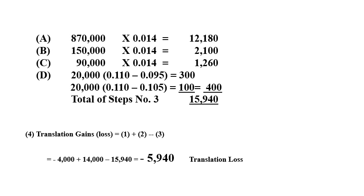For dividends (step d): the rate used is the rate at the date of payment. In this exercise, dividends were paid in two parts — 20,000 at June 1st and the other part at December 1st. At June 1st, the rate was 0.095; at December 1st, the rate was 0.105. The result is 300 plus 100, equaling 400.